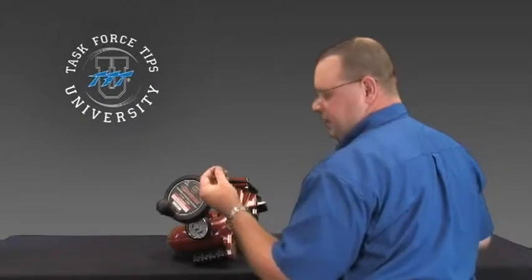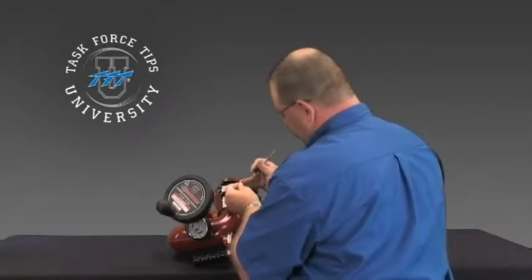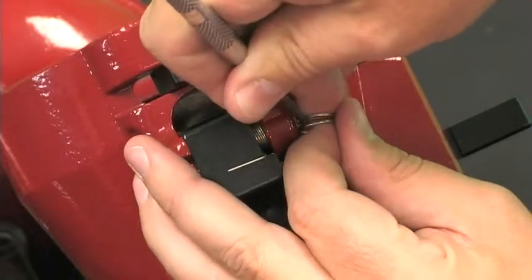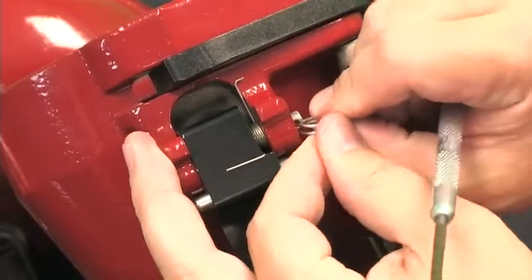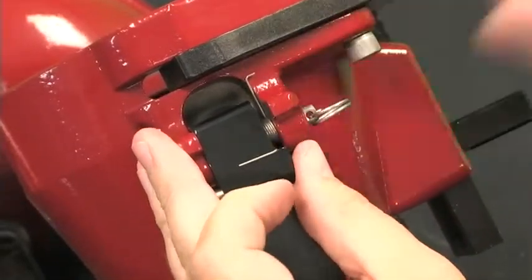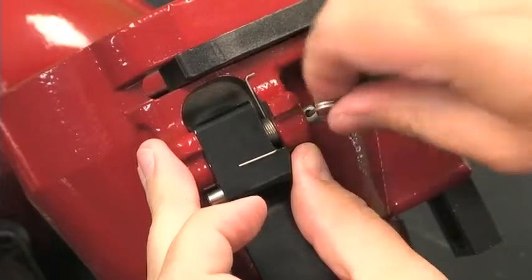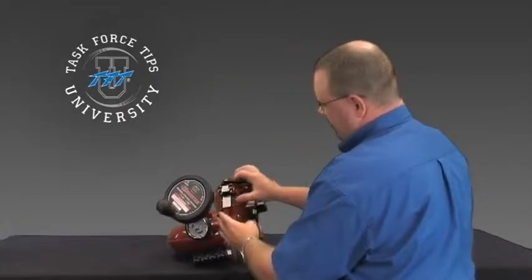Last step is to reinsert the spiral pin. Once the spiral pin is back in place, make sure that that spring works and actuates the lever lock.